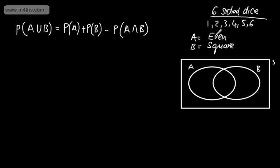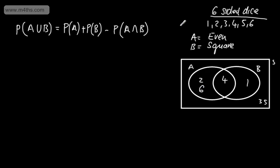Is 1 even? No. Is it square? Yes. So 1 goes in B only. 2 is even but not square, so it goes in A only. 3 is neither even nor square, so it goes outside. 4 is both even and square, so it goes in the intersection. 5 is neither, so it goes outside. And 6 is even but not square.